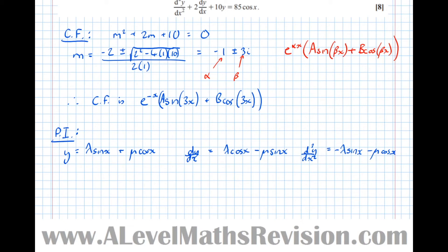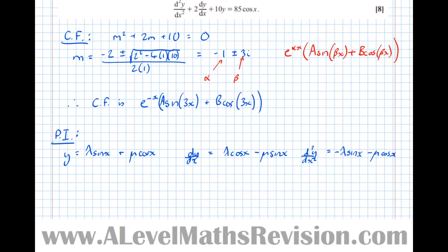So now, summing that into the original equation, i.e. this one here, we'll be able to find the values of lambda and mu. So we've got d²y/dx². So we've got minus lambda sine x minus mu cos x. Plus 2 lots of dy/dx, which was lambda cos x minus mu sine x.